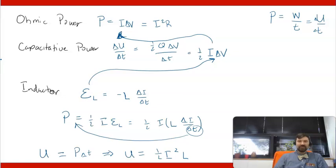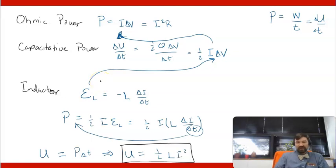Multiplying both sides by Delta T to get energy U equals P times Delta T, the energy stored should look like one-half I squared L, or one-half L I squared. That is the energy being stored by an inductor. Note that I've taken an absolute value for the power, which is why there's no minus sign here.